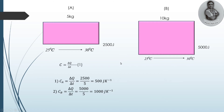Now for specific heat capacity, I am going to modify the equation. The energy provided can be calculated if the heat capacity is known: ΔQ = C × ΔT. This is the general formula — remember this equation.